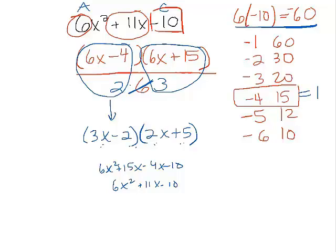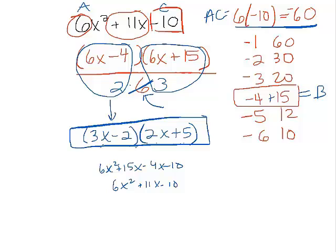Right? So this added to b. This was our a times c. But in the end, remember we had to divide by that 6 because we didn't want to get 36x squared. So that is how I would factor these non-monic polynomials that have lots of combinations to try.